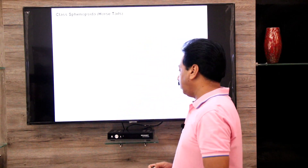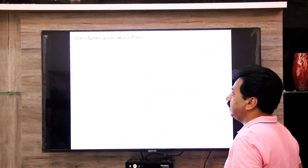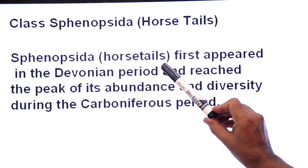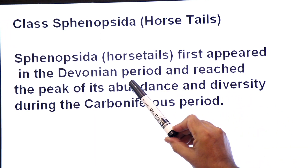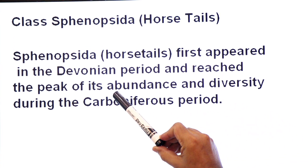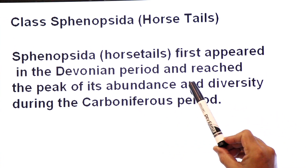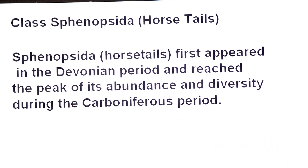The members of Sphenopsida — horsetails — first appeared in the Devonian period and became very dominant during the Carboniferous period. We will study only one genus: Equisetum, the horsetail. Sphenopsida members first appeared in the Devonian period and reached the peak of their abundance and diversity during the Carboniferous period.